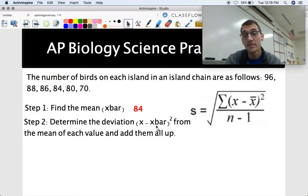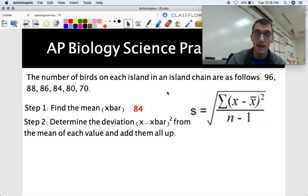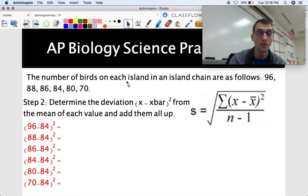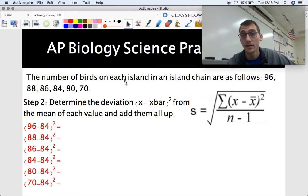And we've been doing this since grade school, like add them all up, divided by the number of terms. So what I did here is that we added up 96, 88, 86, 84, 80, and 70, and divided by 6 because that's how many islands there are, and we get our average as being 84. Yes, we're doing good. So X bar is equal to 84. That is step one of calculating standard deviation. Step two is determine the deviation from the mean of each value and then add them all up. So how much do our values vary or differ from 84?